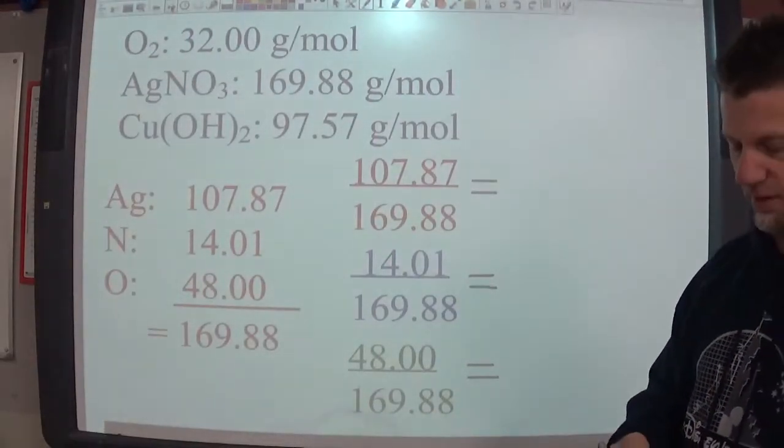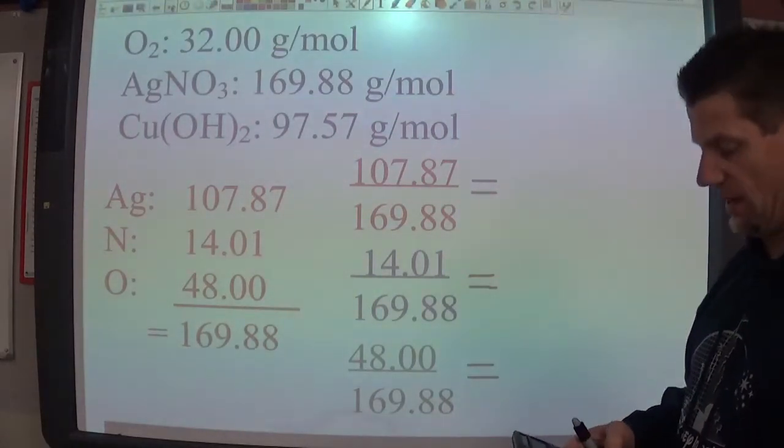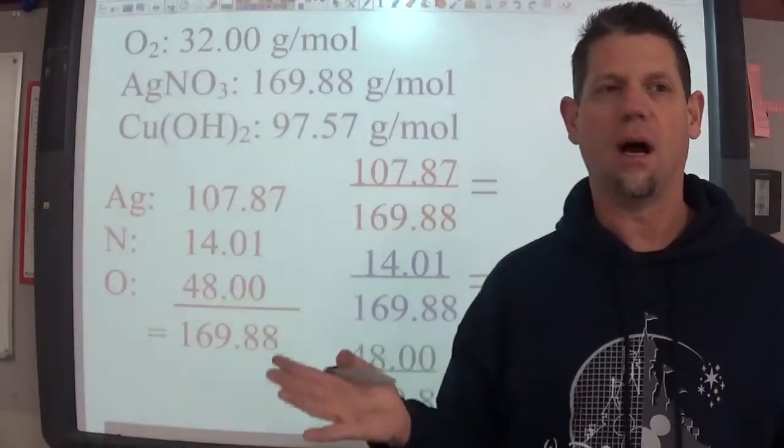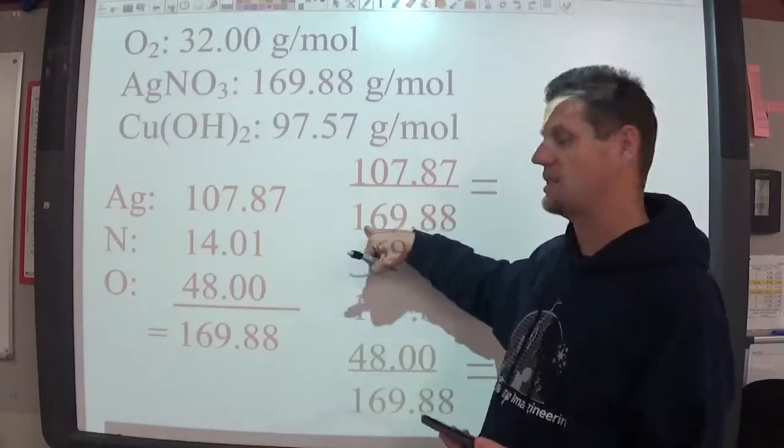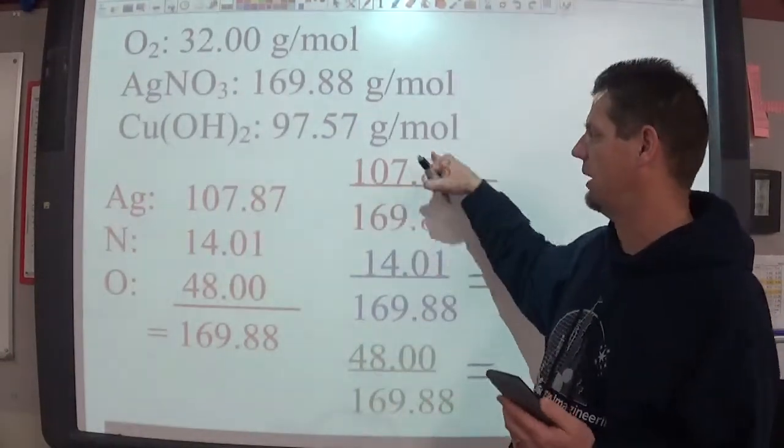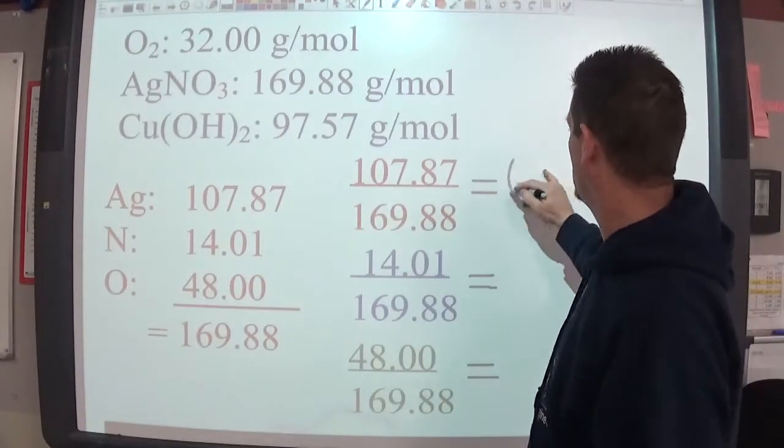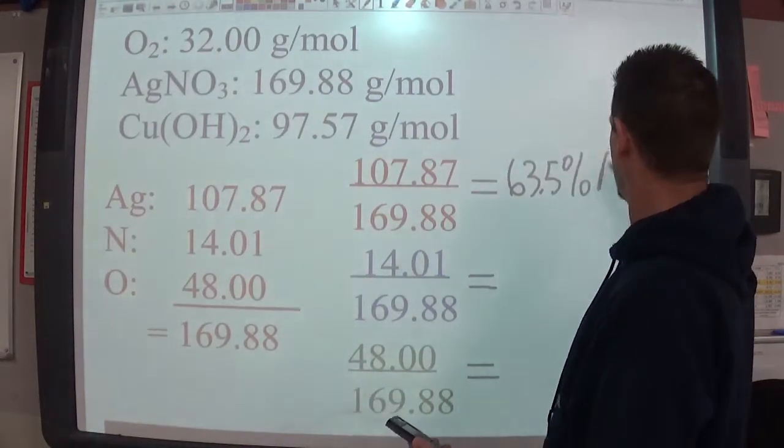So you take your calculator, take 107.87 and you divide by the total 169.88. It's again, percent composition is the same as percent of a grade on a test. So the test was worth 169.88. The only ones I got right were silver. I got 107.87 out of 169.88 to three significant figures.